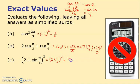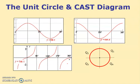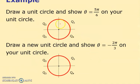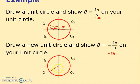This is what we covered yesterday with the CAST diagram. Where does 5π/6 sit? π/6 is 30, so 5π/6 is 150 degrees. I always draw from the horizontal axis — the interesting angle is 30 degrees to the horizontal. For −2π/3, that's −120 degrees, going around to there, and the interesting angle is 60 degrees. You always want the angle to the horizontal, between 0 and 90 degrees.